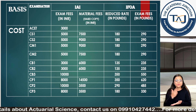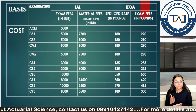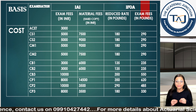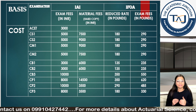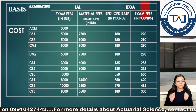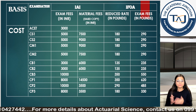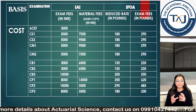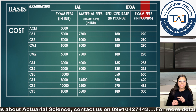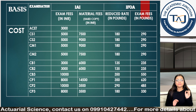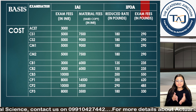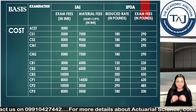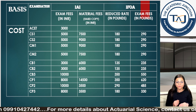Reduced rate eligibility for IFOA is based on income criteria. If a student earns less than seven lakhs per annum, they are eligible for reduced rates. Under reduced rate eligibility, the IFOA fee for CS1, CS2, CM1, or CM2 is 180 pounds — roughly 18,000 Indian rupees. Compared to II's exam fee of around 12,500 rupees, II is still cheaper, though the gap has narrowed.